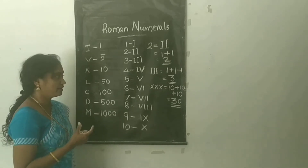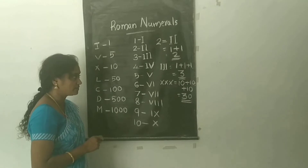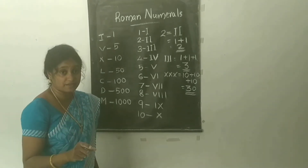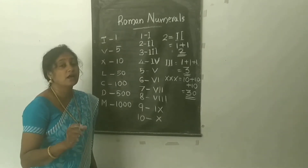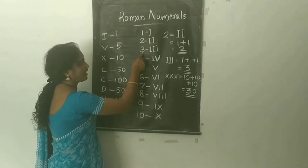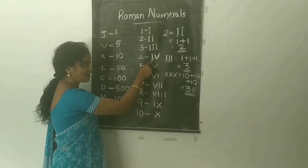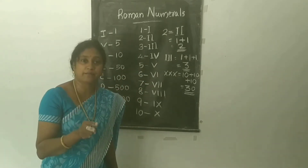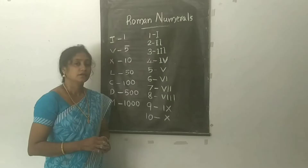The second rule is that a symbol can be repeated only 3 times. That is why we write 3 as III, but 4 is written as IV — we cannot write IIII.